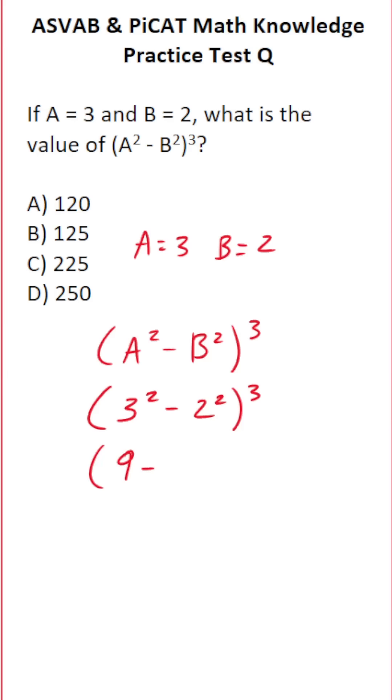2 squared is the same thing as 2 times 2, which is 4. 9 minus 4 is going to be 5, so this becomes 5 to the third power.